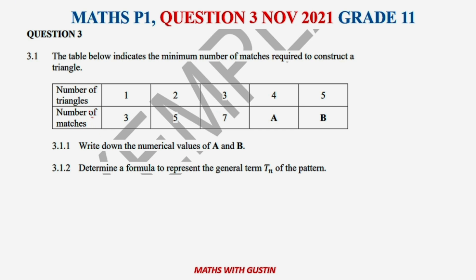The first question says 3.1.1: write down the numerical value of A and B. Looking at this, we have 3, then from 3 to 5, the difference is just 2, so it means 2 has been added. Therefore from 5 to 7, it means 2 has been added.